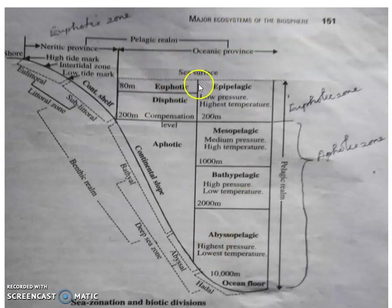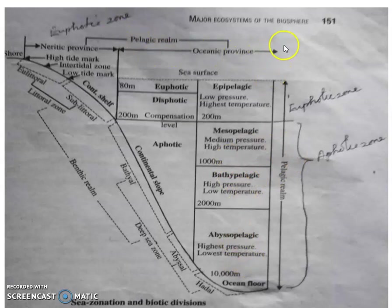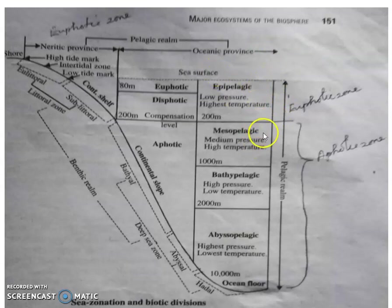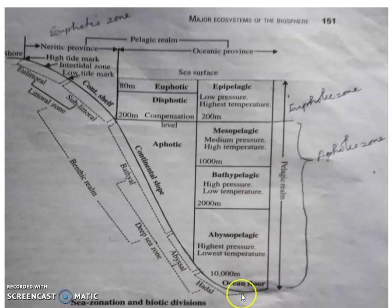Vertically, if we see this water column, the oceanic province is again divided into the epipelagic zone, mesopelagic zone, bathypelagic zone, and abyssopelagic zone. From the surface up to 200 meters is the epipelagic zone, up to 1000 meters is the mesopelagic zone, up to 2000 meters is the bathypelagic zone, and up to 10,000 meters is the abyssopelagic zone, ending at the ocean floor.